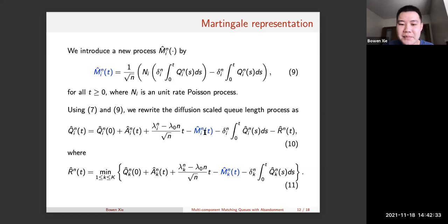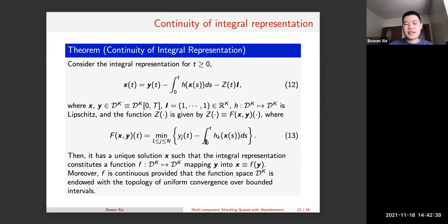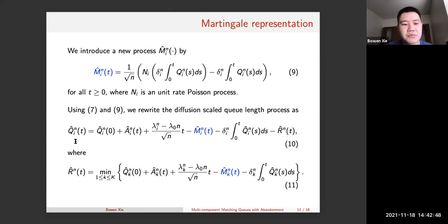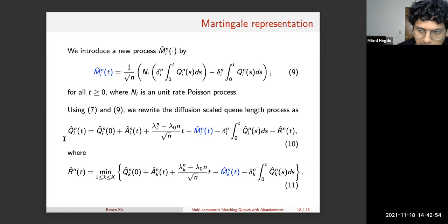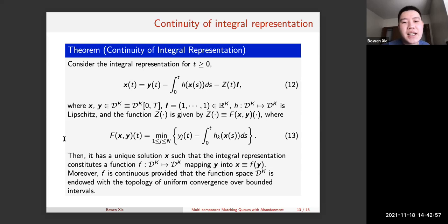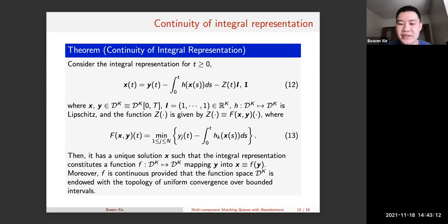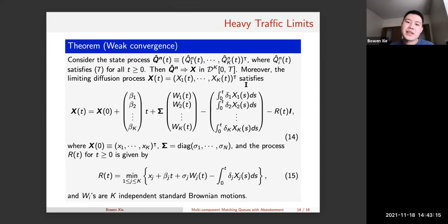Everything is basically the same, except we construct a martingale representation. There is a theorem that helps us prove weak convergence of the full queue-length process. The continuity of the integral representation is proved using the fixed-point theorem — similar to results in a paper by Pang, Talreja, and Whitt — with the slight difference that we have a somewhat non-linear term C(t) here.